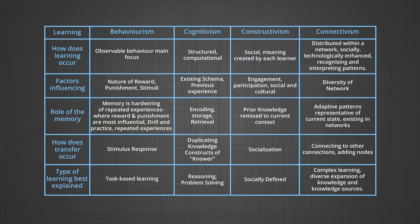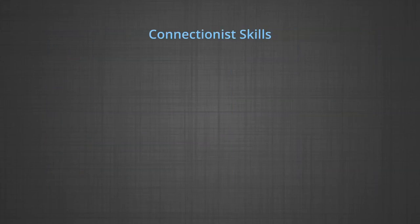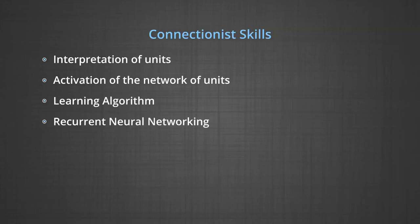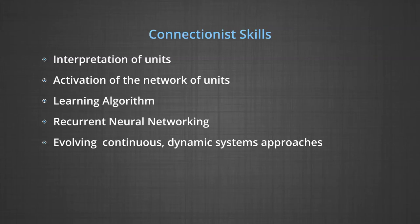Dear learners, as you can observe from this table, the various attributes of behaviorism, cognitivism, constructivism and connectionism theories of learning depict different aspects in terms of: how learning occurs, factors influencing learning, role of memory, drill and practice, repeated experiences, how transfer occurs, and types of learning best explained by each. Connectionist skills include: interpretation of units, activation of the network of units, learning algorithms, recurrent neural networking, and evolving continuous dynamic systems approaches.